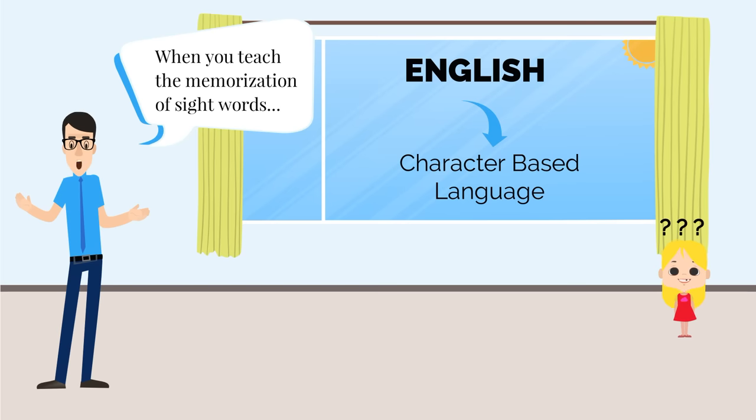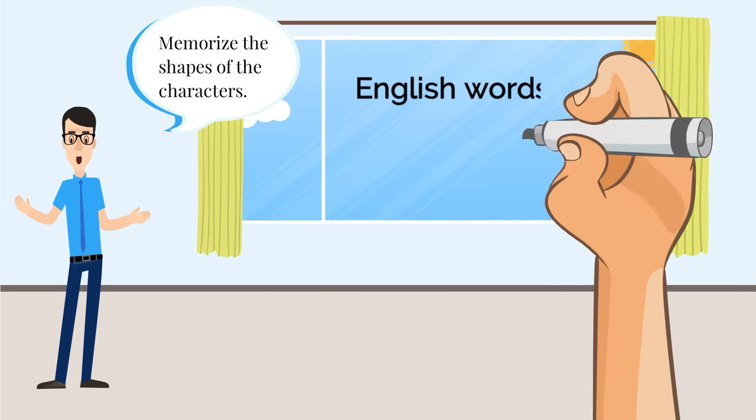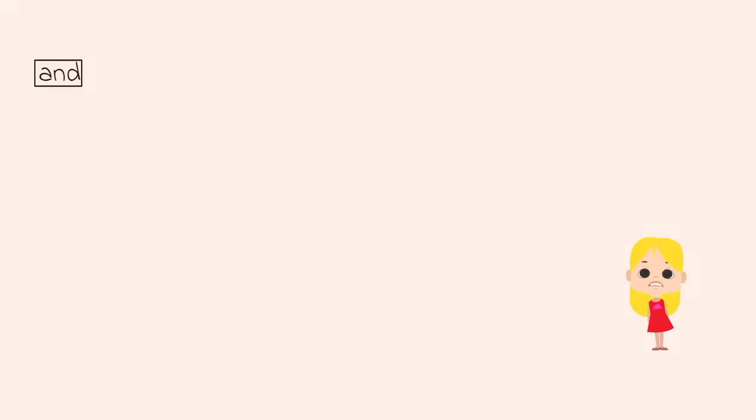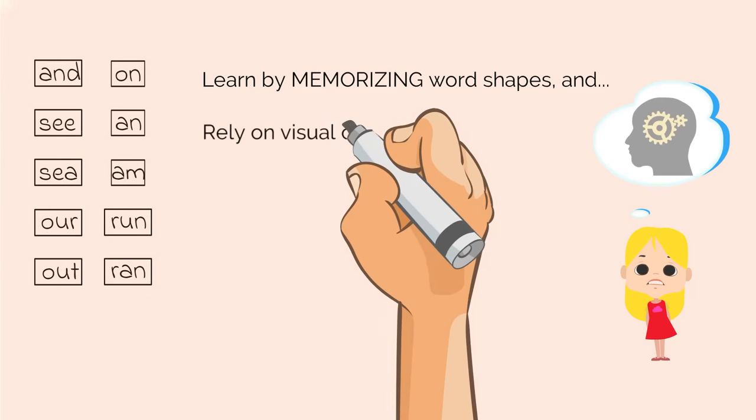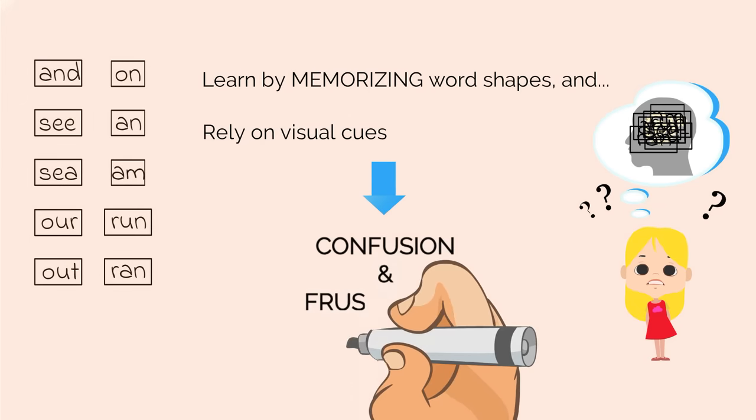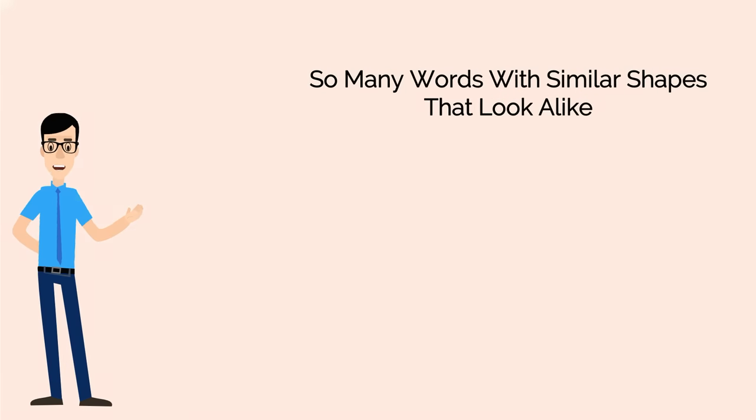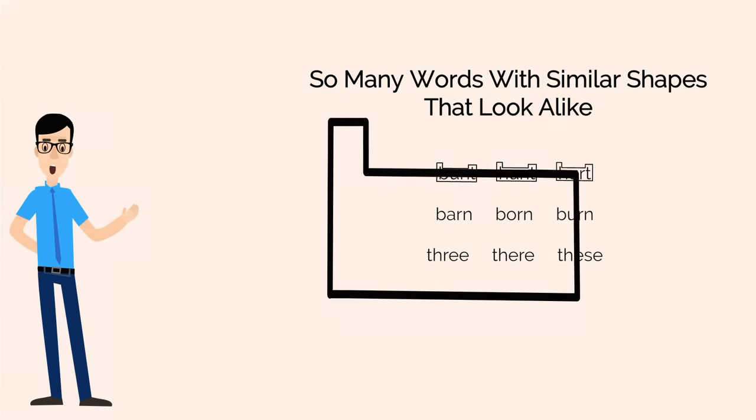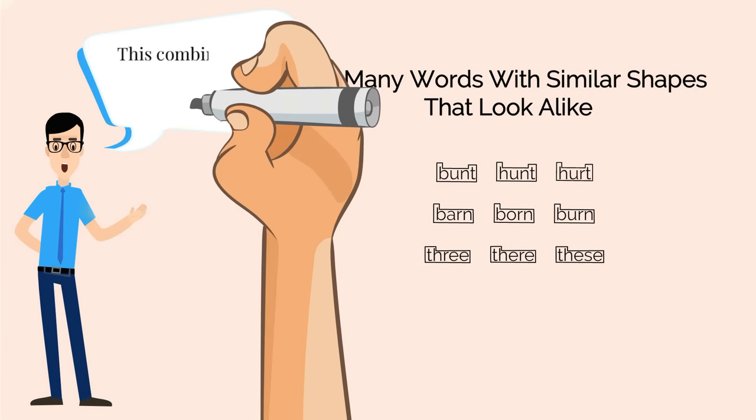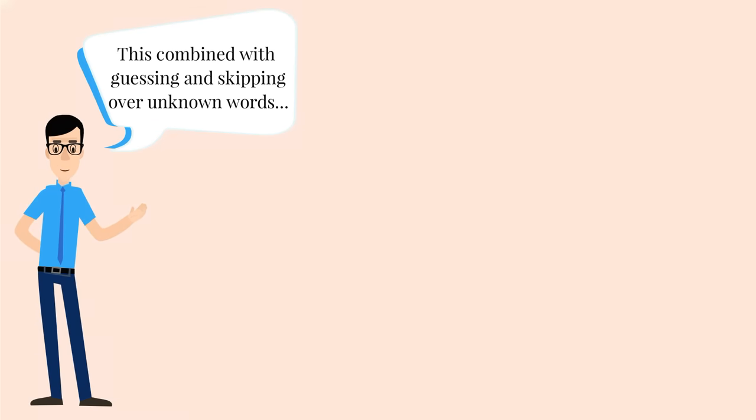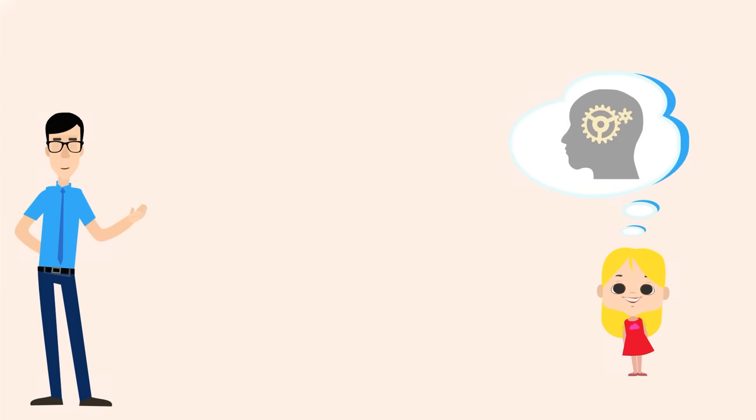When you teach the memorization of sight words, you are in effect teaching English as if it were a character based language such as Chinese, where each character represents a meaning and the only way to learn is to memorize the shapes of the characters. English words were never designed to be memorized as shapes. When you teach a child to read using sight words, the child learns by memorizing the shapes of the words. The child must rely on visual cues to try to figure out what a word is, and this quickly leads to confusion and frustration. The key stumbling block is that there are so many words with similar shapes that look alike. Let me give you a few examples: but, hunt, hurt, barn, born, burn, three, there, these. The list goes on.